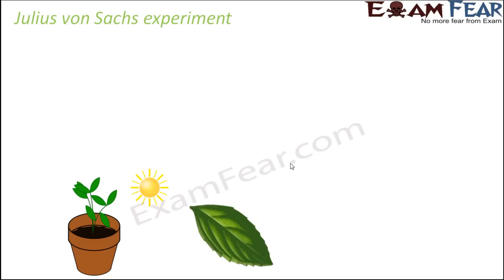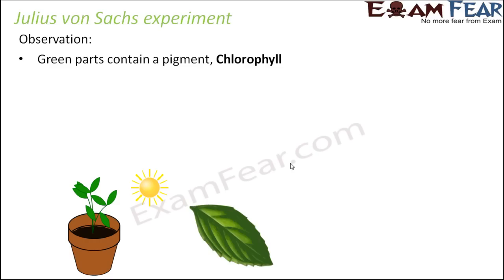He observed the leaves even more minutely and found that in the presence of sunlight, plants make food in the form of glucose, which is stored in the plant in the form of starch, a polysaccharide. He also observed that the green part of the plant — for example, the leaf — contains a pigment called chlorophyll. This was a very important conclusion.